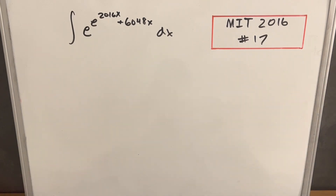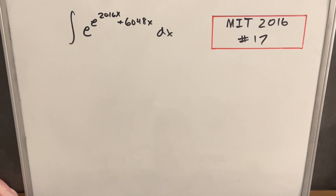We have another interesting integral from MIT Integration Bee 2016, Problem number 17: the integral of e to the e to the 2016x plus 6048x dx.